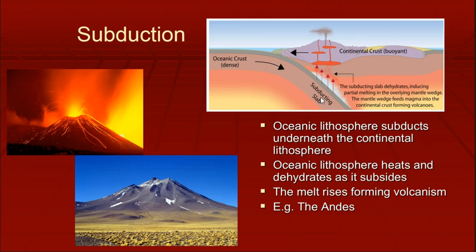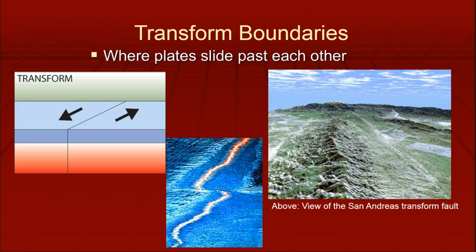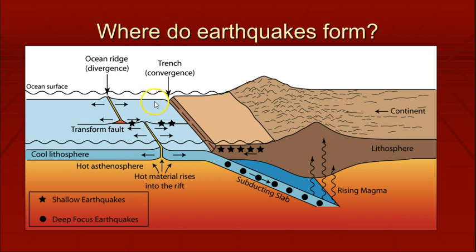Volcanoes and earthquakes occur at subduction or converging plate boundaries. Volcanoes occur but not earthquakes at diverging boundaries. Interestingly, at these subduction zones you get really deep waters — the Marianas Trench is right here and it's about 11 miles deep. Earthquakes form at transform faults and at subduction zones, and volcanoes rise further inland where you have that subducting slab.